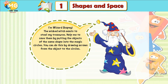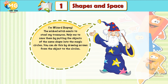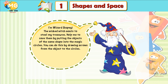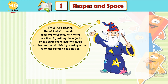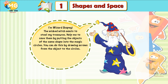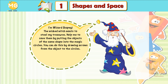Let's look at shapes. I am Wizard Shapey. The wicked witch wants to steal my treasures. Help me to save them by putting the objects of the same shape into the magic circles. You can do this by drawing arrows from the object to the circles.